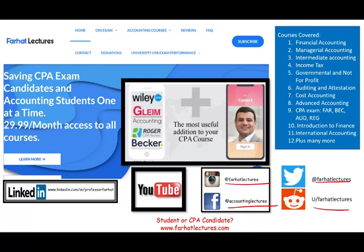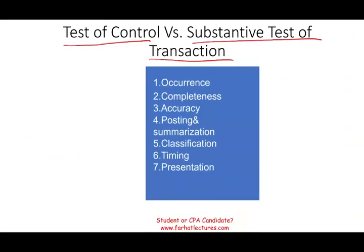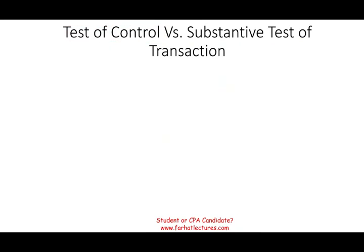Let's look at those audit procedures and determine: first, is this a test of control or a substantive test of transaction? And second, which audit objective is it satisfying? For test of control procedures, you want to be comfortable with: making inquiries, examining documents, observation, and re-performance. If you see the word 'examine,' be careful — it could be a test of control.